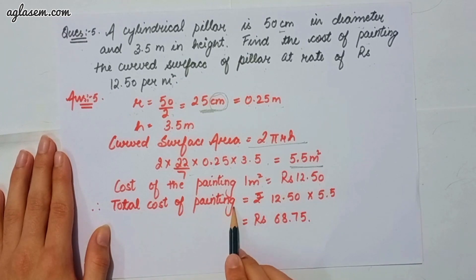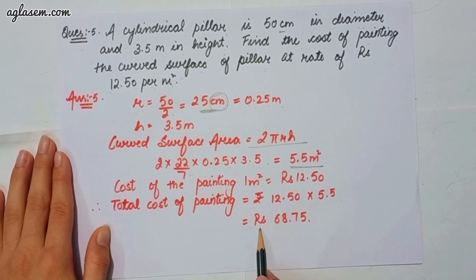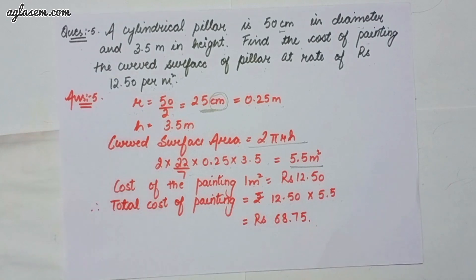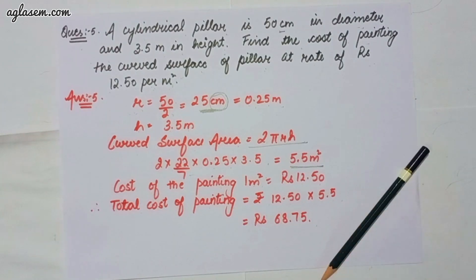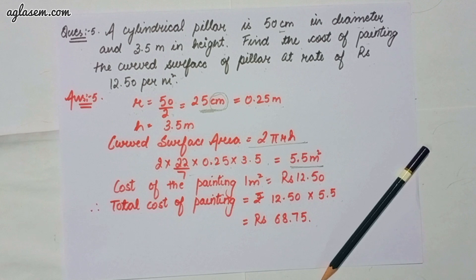Total cost of painting = ₹12.50 × 5.5 = ₹68.75. We will continue the rest of the questions in another video. If you have any query or doubt related to any question, please put it in the comment section below. For regular updates, please subscribe to our channel AglaSem Schools. We wish you a safe life — do take care of yourself.